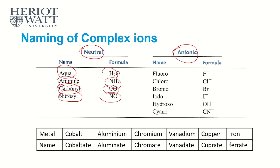For anionic ligands — for example, fluoride, chloride, bromide, iodide, the halogens, and then OH and CN. These are the common ligands, not all of them, but the common ones. The naming is quite simple: fluorine is fluoro, chlorine is chloro, bromine is bromo, iodine is iodo. OH is not called hydroxide — in this case it's called hydroxo. And CN is called cyano.